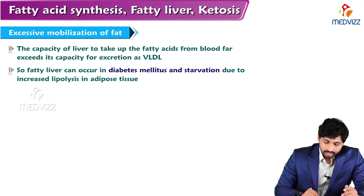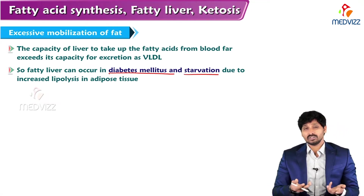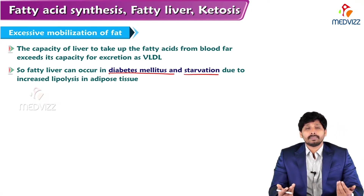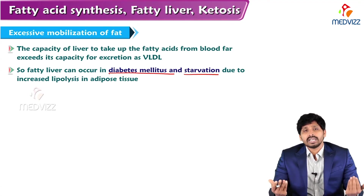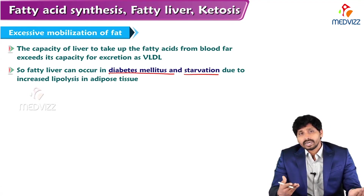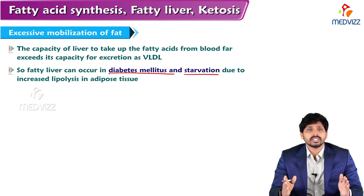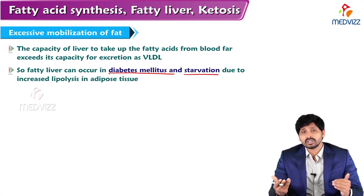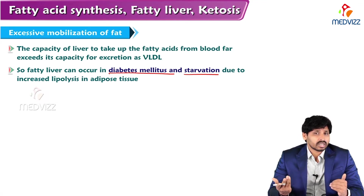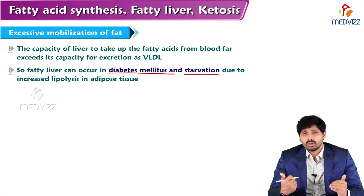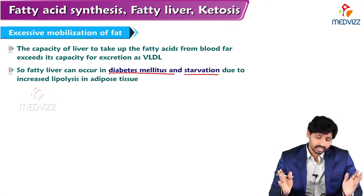Fatty liver can occur in diabetes mellitus and starvation. In diabetes mellitus, there is no glucose, so insulin is absent and glucagon mobilizes TAG from adipose tissue. Hormone-sensitive lipase degrades TAG into free fatty acids, and more free fatty acids flow in circulation and reach the liver. This leads to more synthesis of TAG and hence accumulation of TAG in liver. In both diabetes mellitus and starvation, more breakdown of TAG leads to free flow of free fatty acids to the liver and making of TAG, leading to fatty liver.